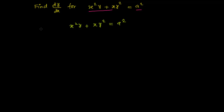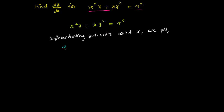The next step is to differentiate both sides — left hand side as well as right hand side — with respect to x. So it will be d by dx of x squared y plus x y squared.